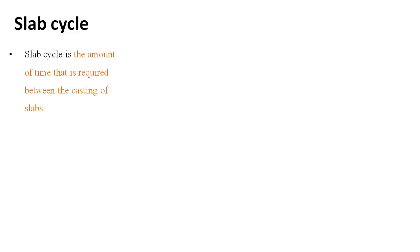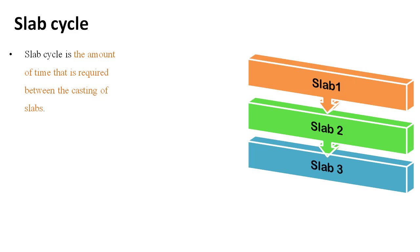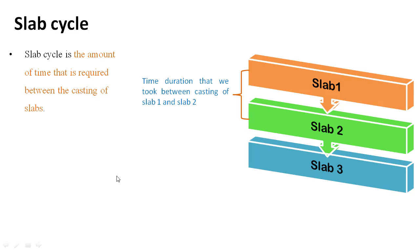Before understanding why we use Tunnel Formwork System, we understand what is Slab Cycle. Slab Cycle is the amount of time required between the casting of slabs. We can understand it from a simple example: for the construction of a three-storey building, we need to construct three slabs, and the slab cycle time is the time required between the construction of slab 1 and slab 2.